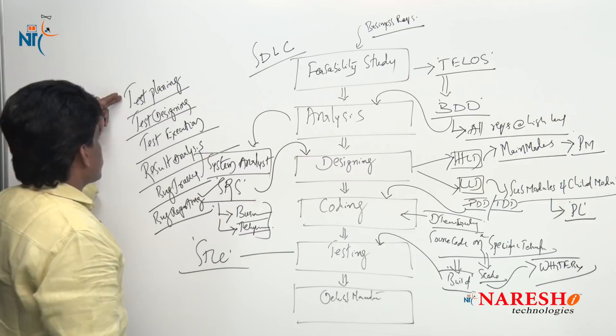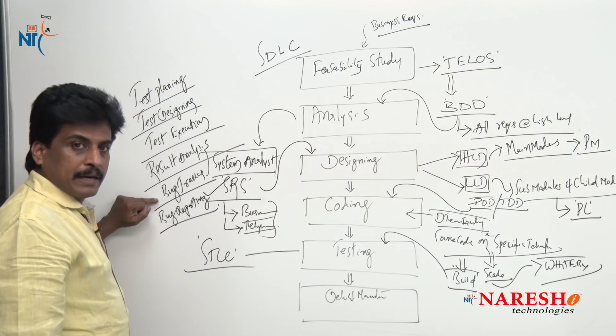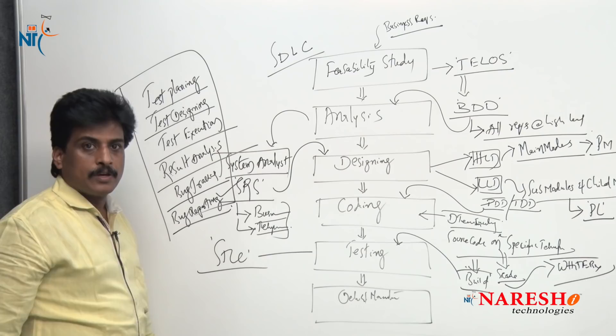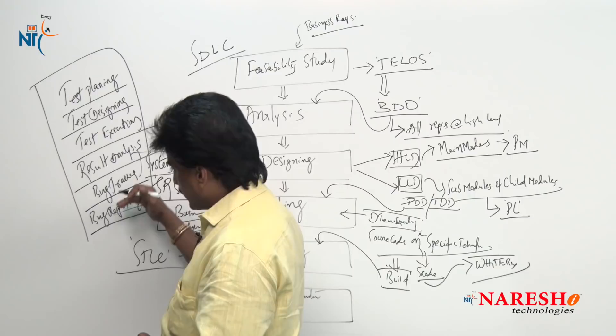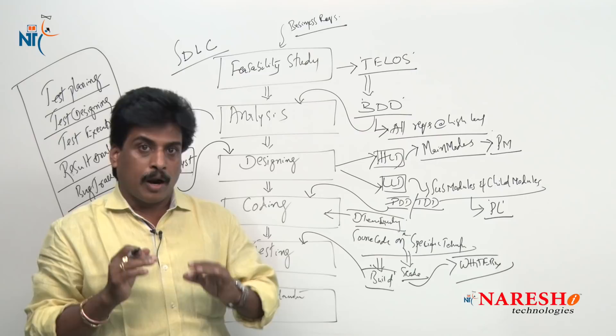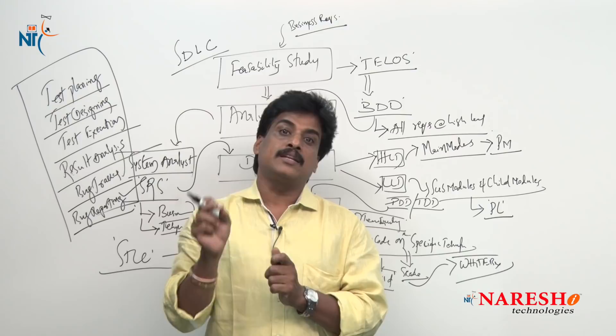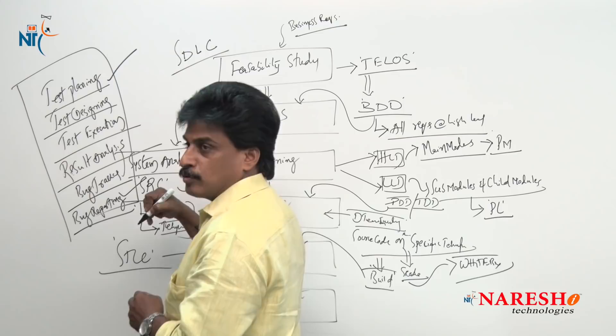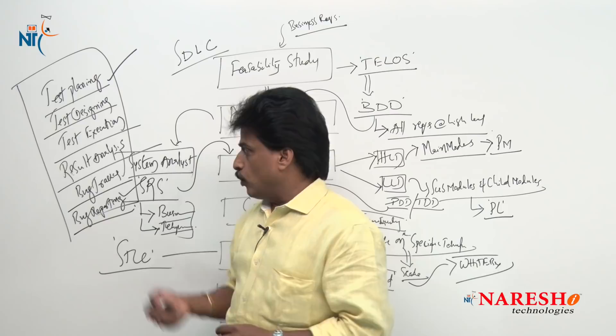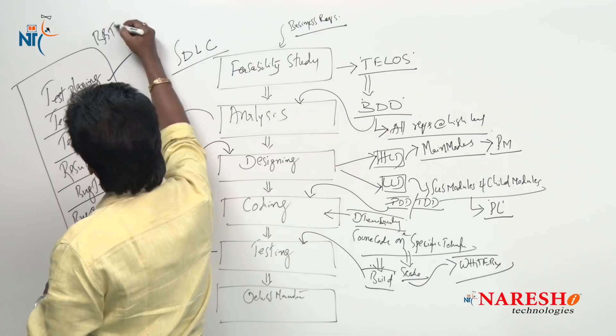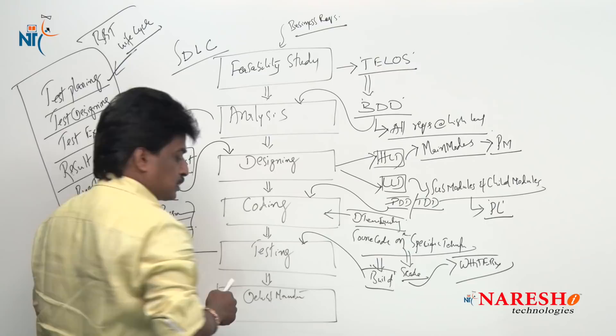STLC contains test planning, test designing, test execution, result analysis, bug tracking, and bug reporting — these are the six phases. STLC is one of the components under SDLC; it is not separate. Once you understand the System Development Life Cycle, it contains STLC components as well. Test planning is a bigger topic and will be discussed separately in the next video session about STLC. Once testing is successfully completed, it is completely the black-box testing life cycle.